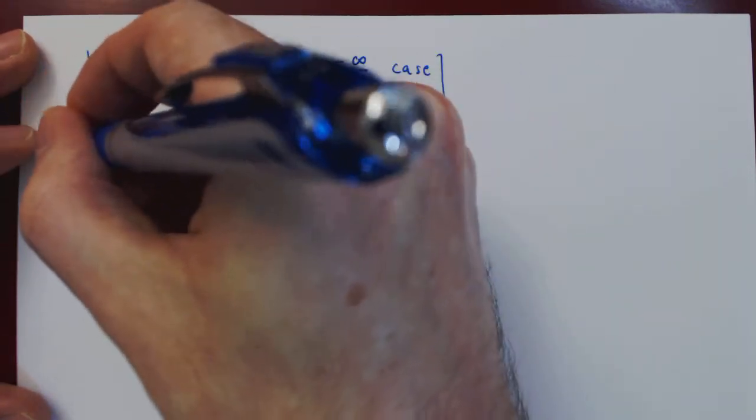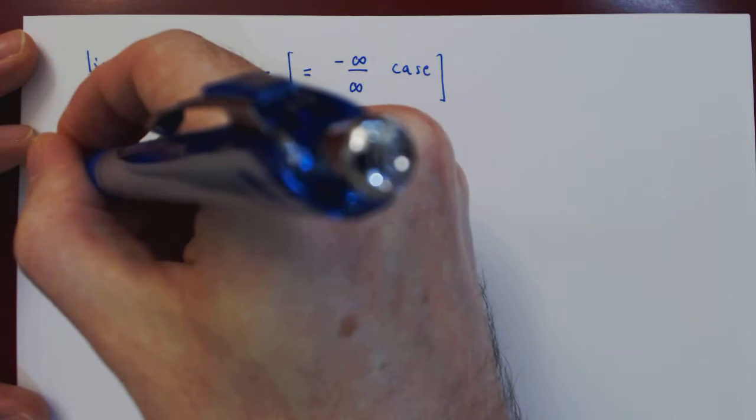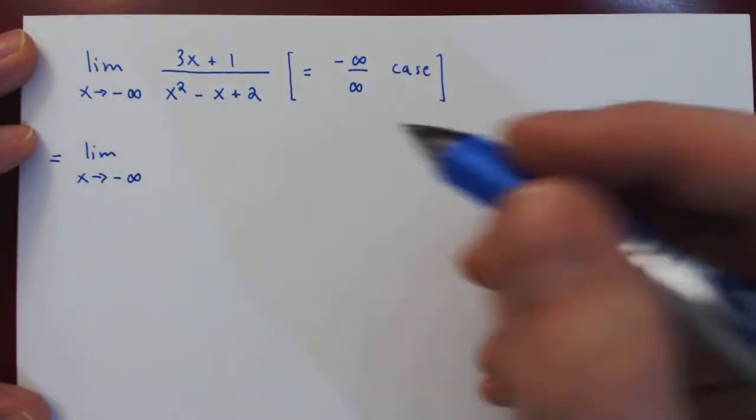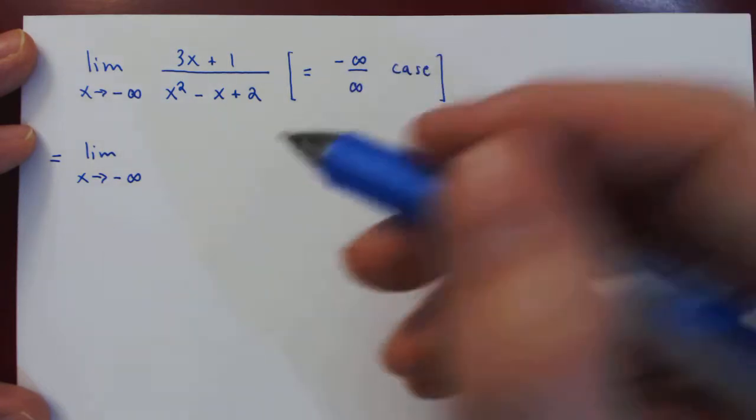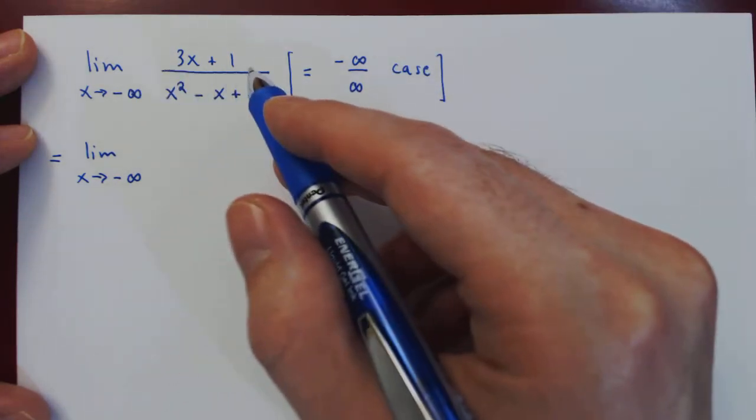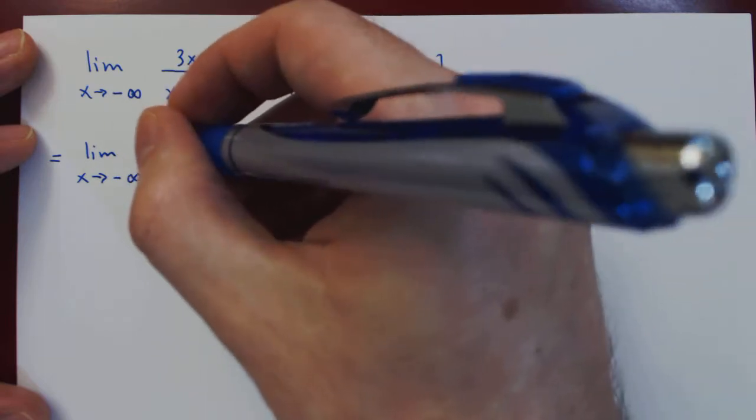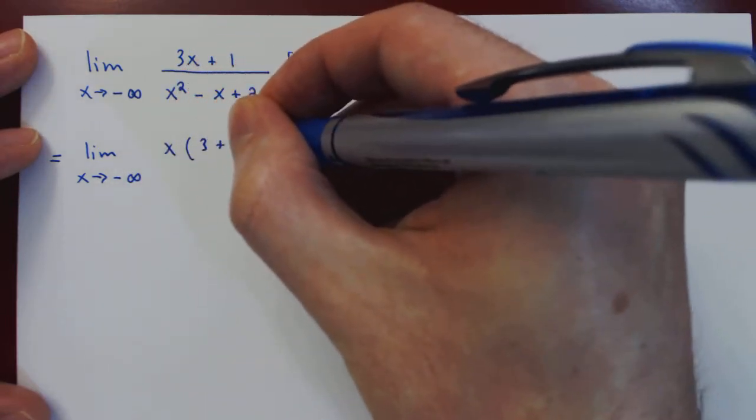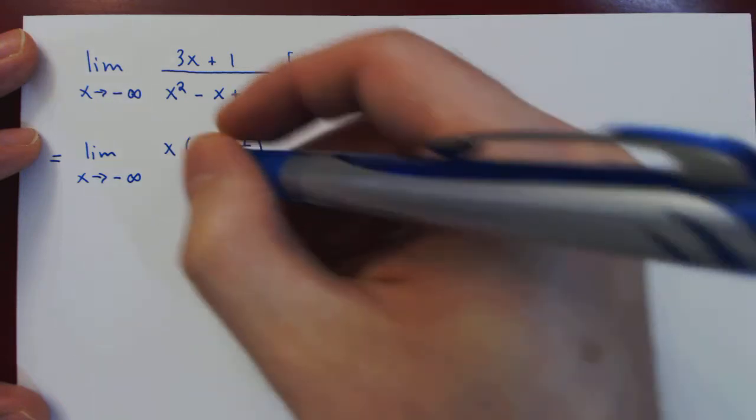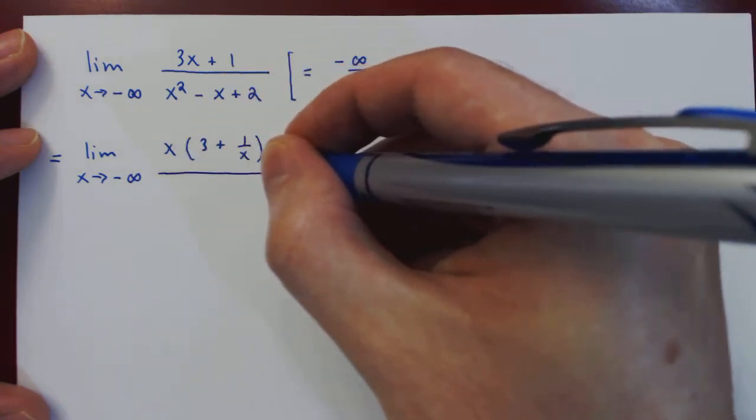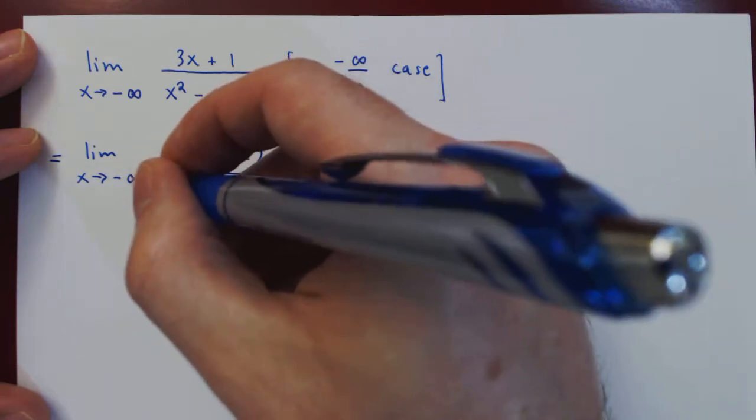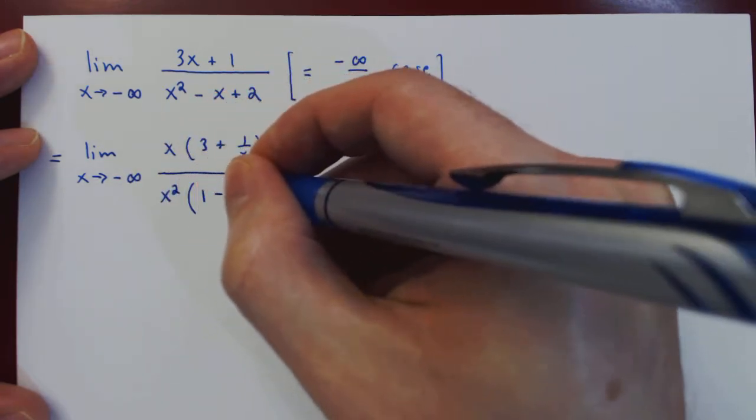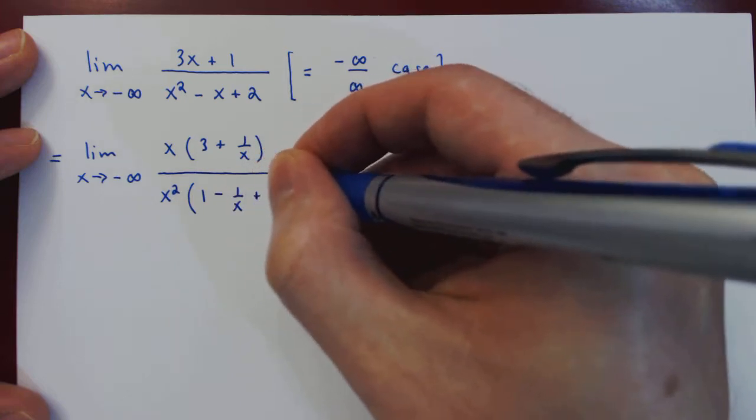To resolve this case, we emphasize the dominant term on the numerator and denominator by factoring. On the numerator, the largest term is x. We factor x from the numerator, leaving 3 plus 1/x. On the denominator, the largest term is x squared. We factor this out, leaving 1 minus 1/x plus 2/x².